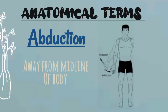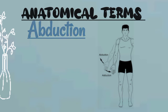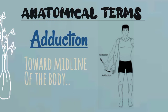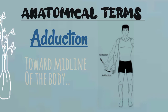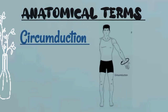The word abduction is used to indicate movement away from the midline of the body. As you can see in the diagram, if you stretch your arm away from your body it is called abduction. While the word adduction is the movement toward the midline of the body — if you pull your hand toward yourself, it would be the adduction of the shoulder.